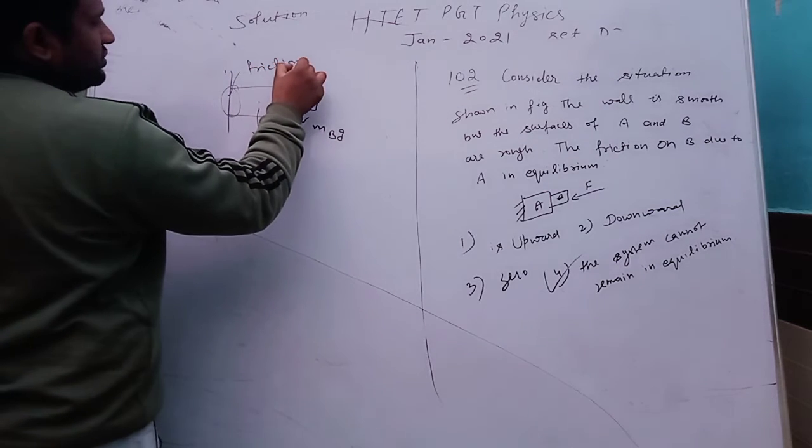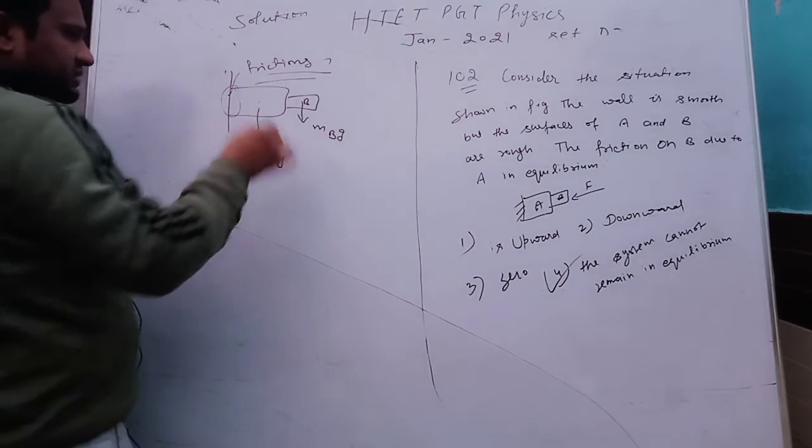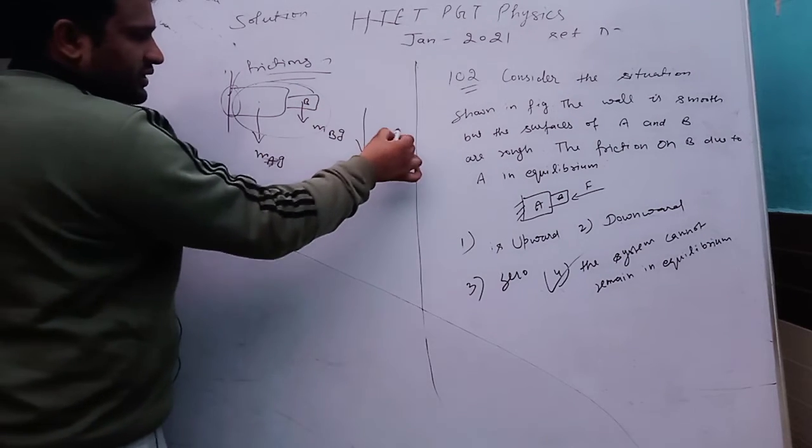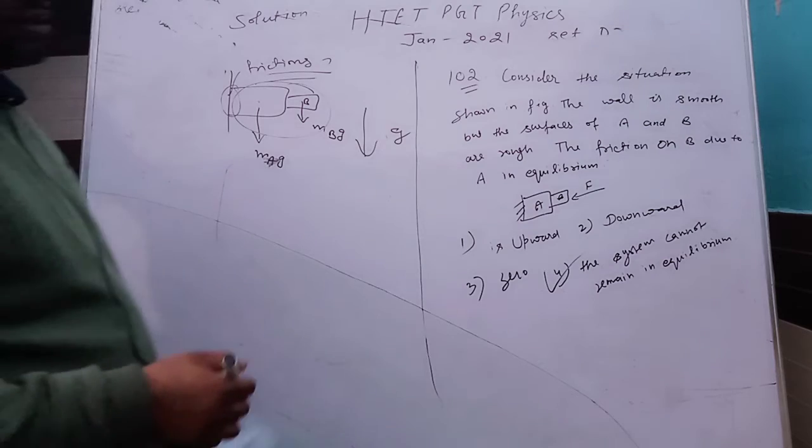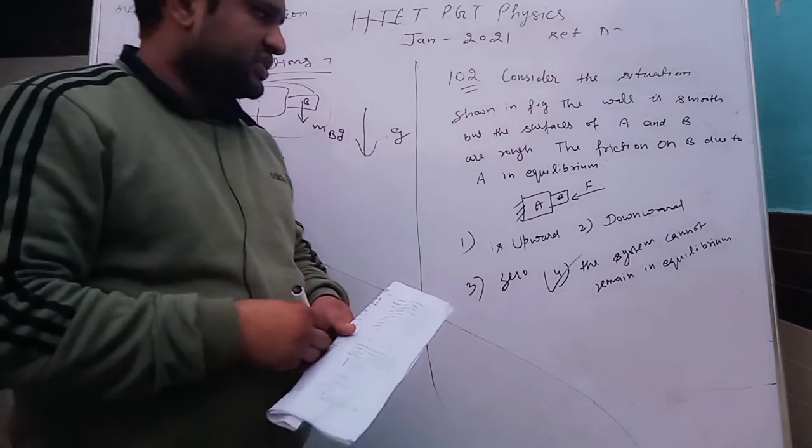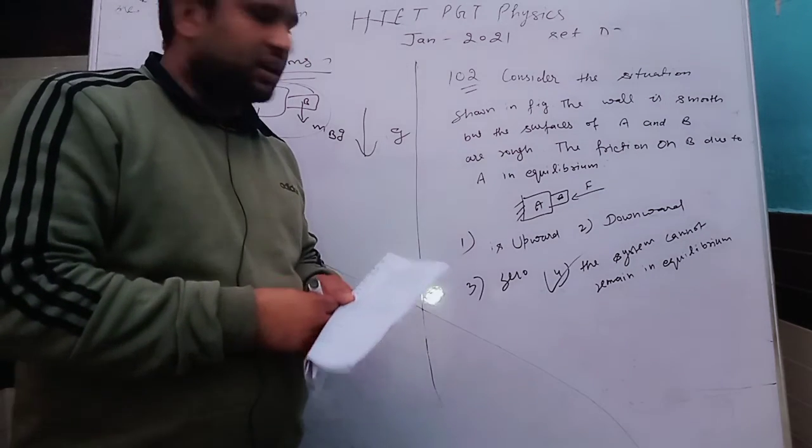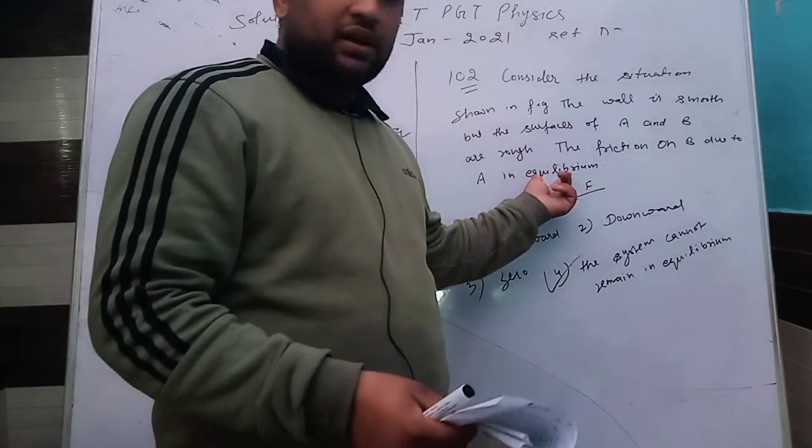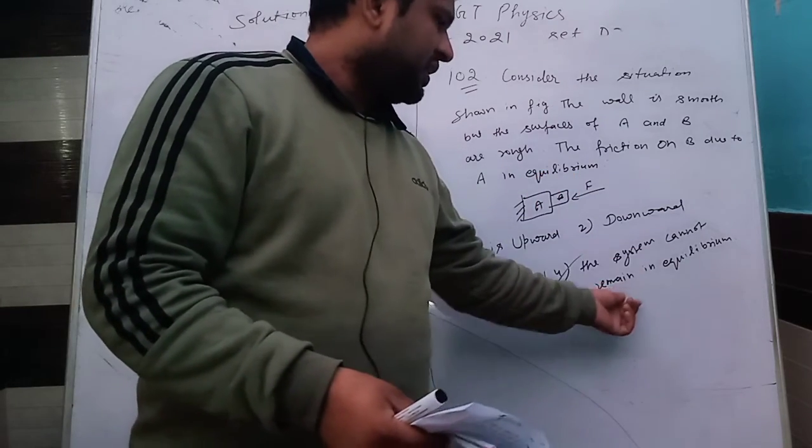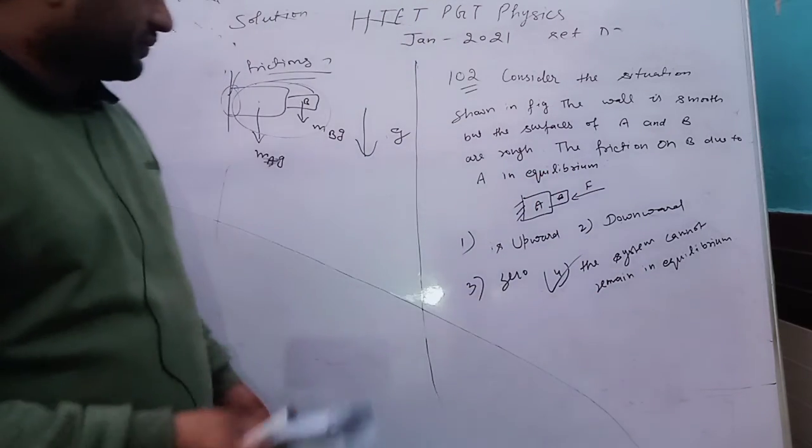Due to the frictionless smooth surface, the whole system is going downward with gravity G. Therefore, the system cannot remain in equilibrium. This is the correct option - option 4.